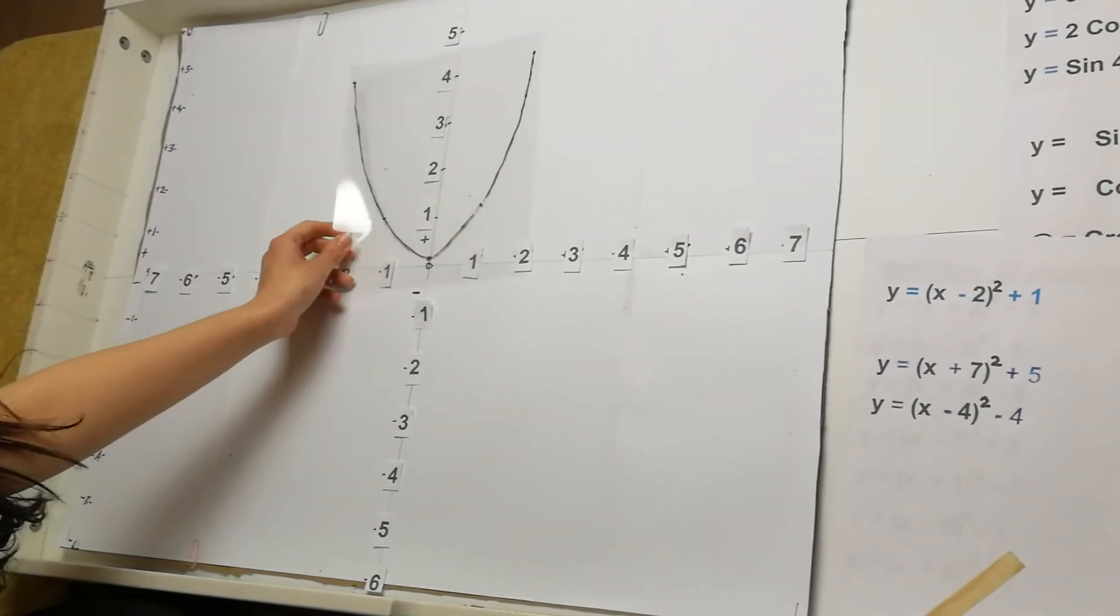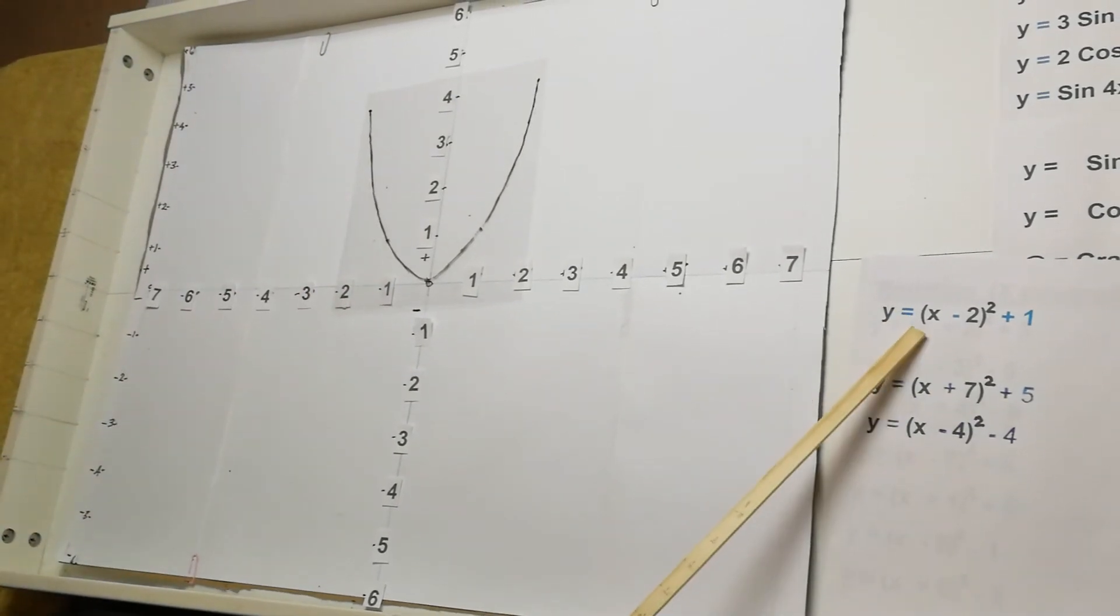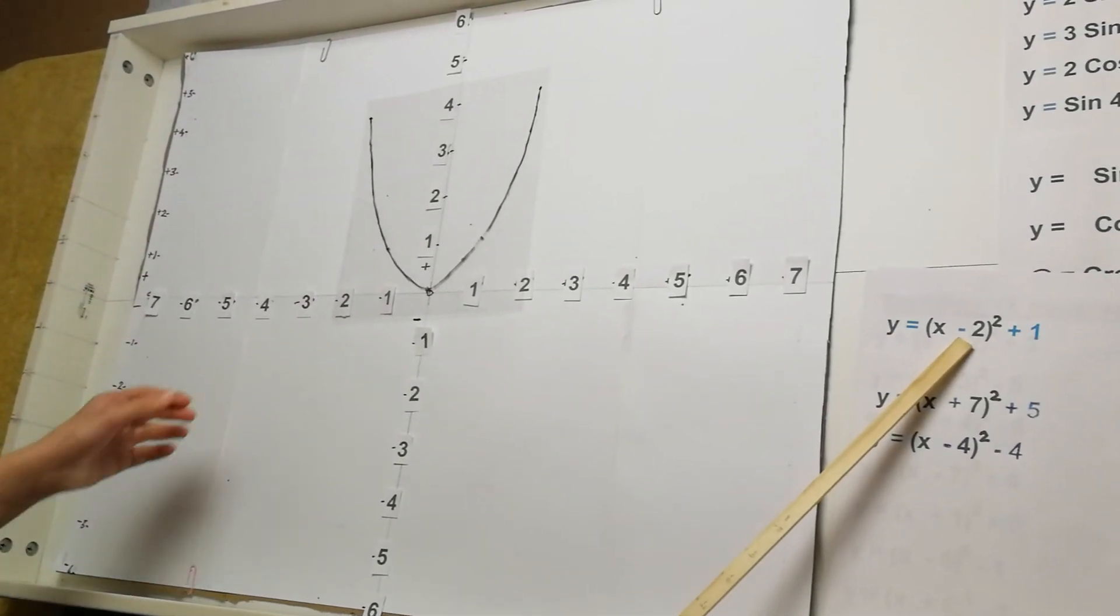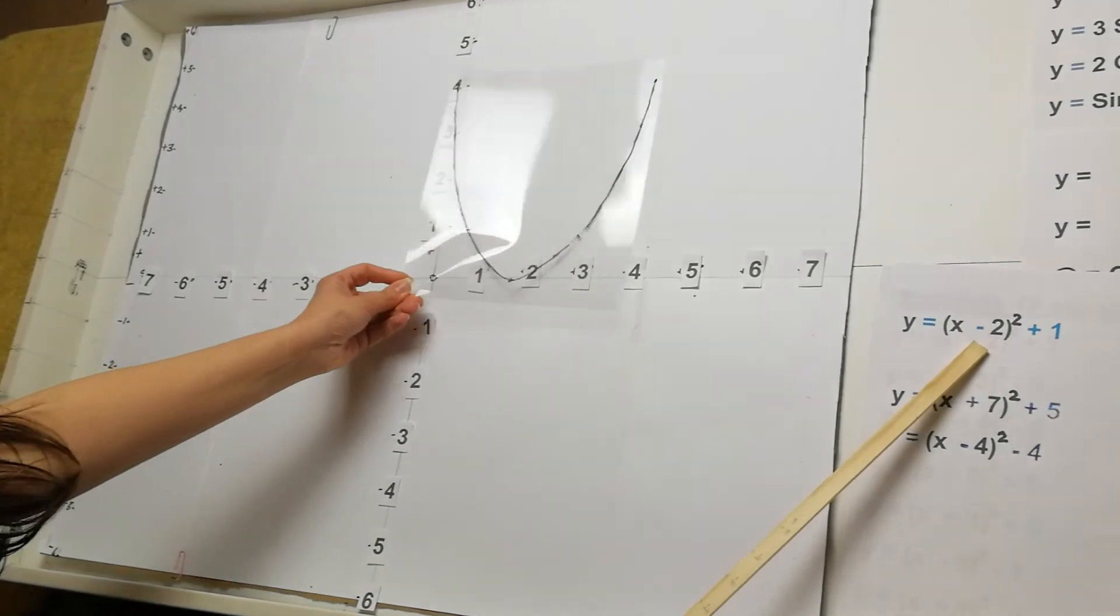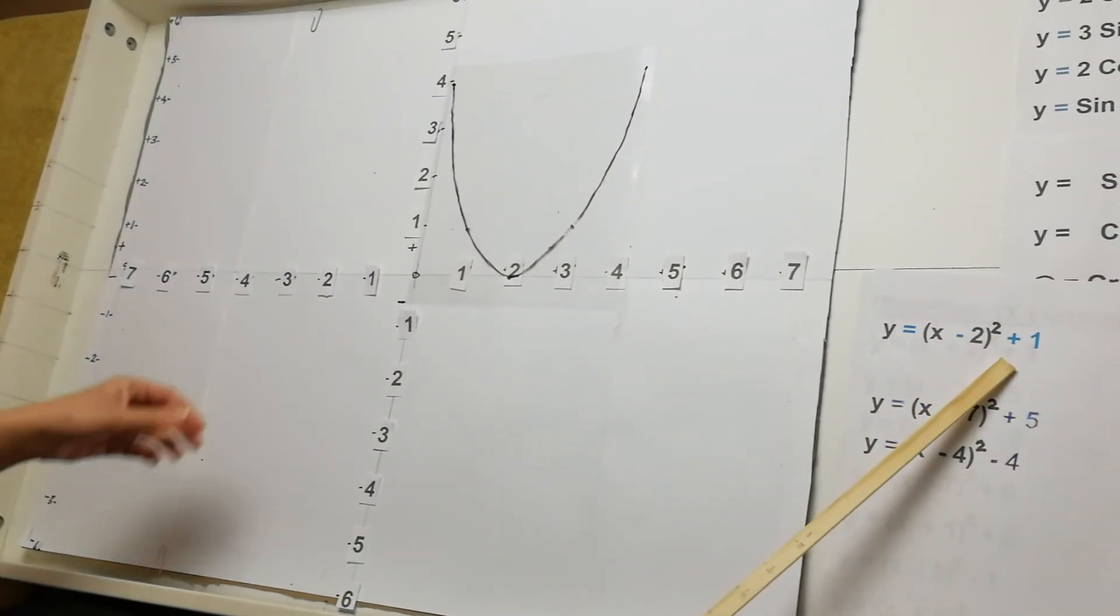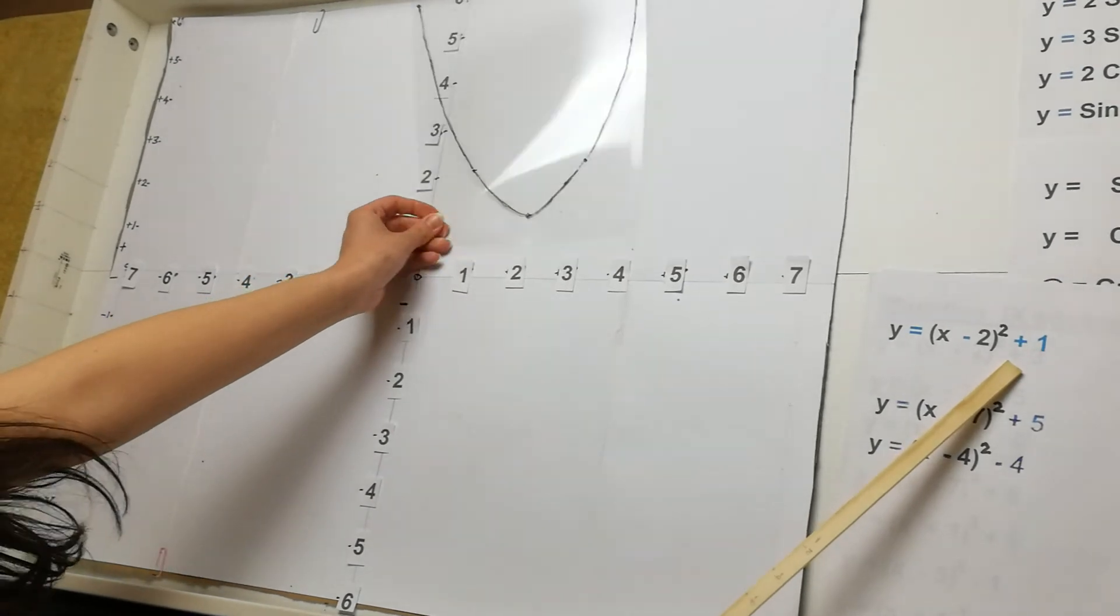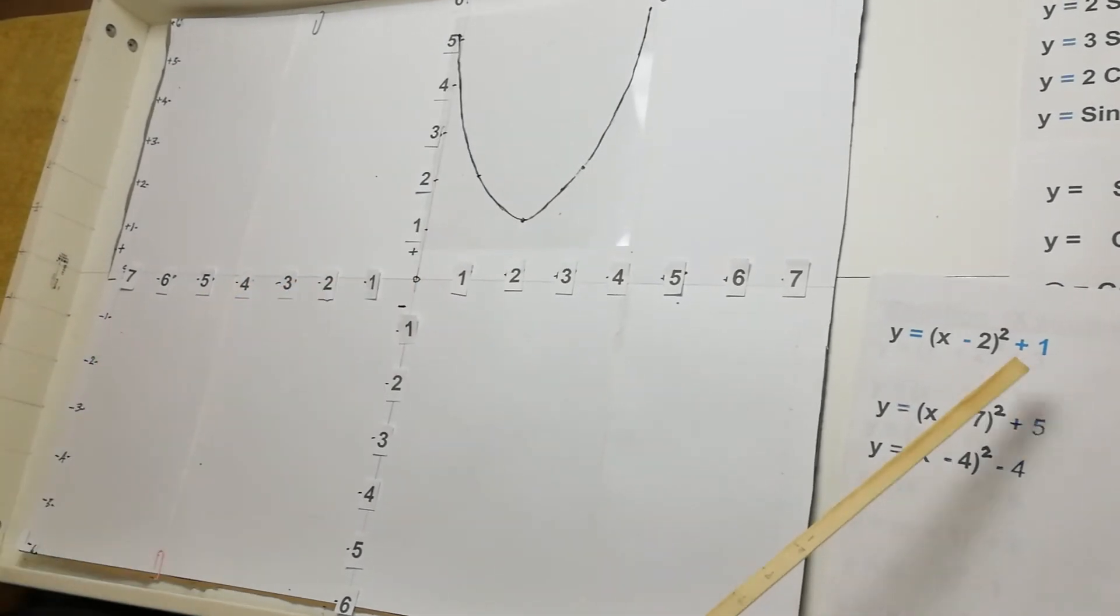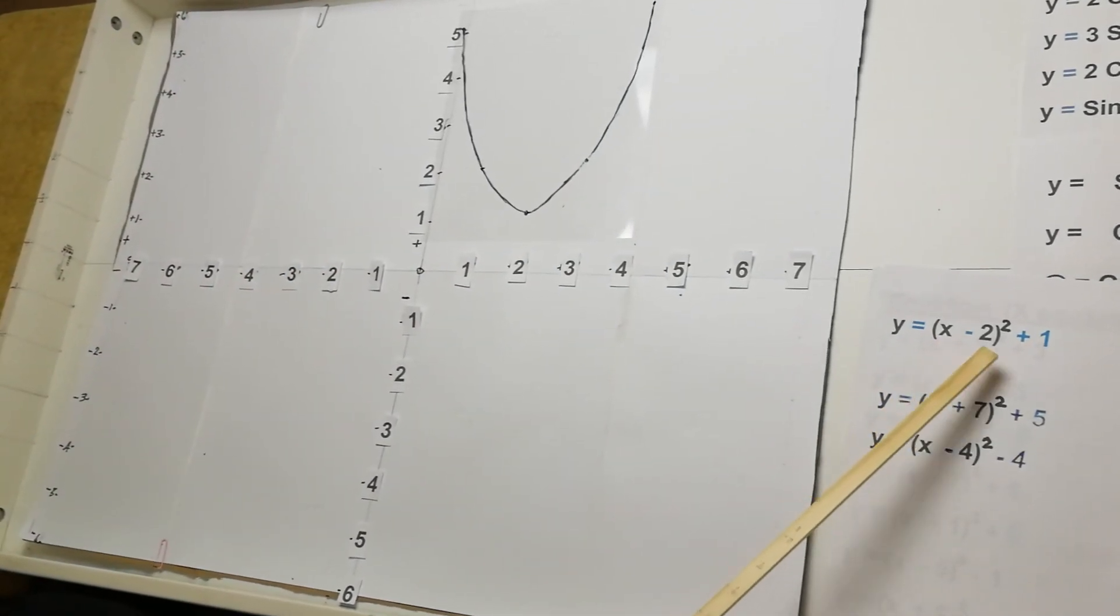The other ones we have here, we've got x take away 2 all squared, means moving to the right by 2. And plus 1 moving up by 1. So the turning point there would be 2, 1.